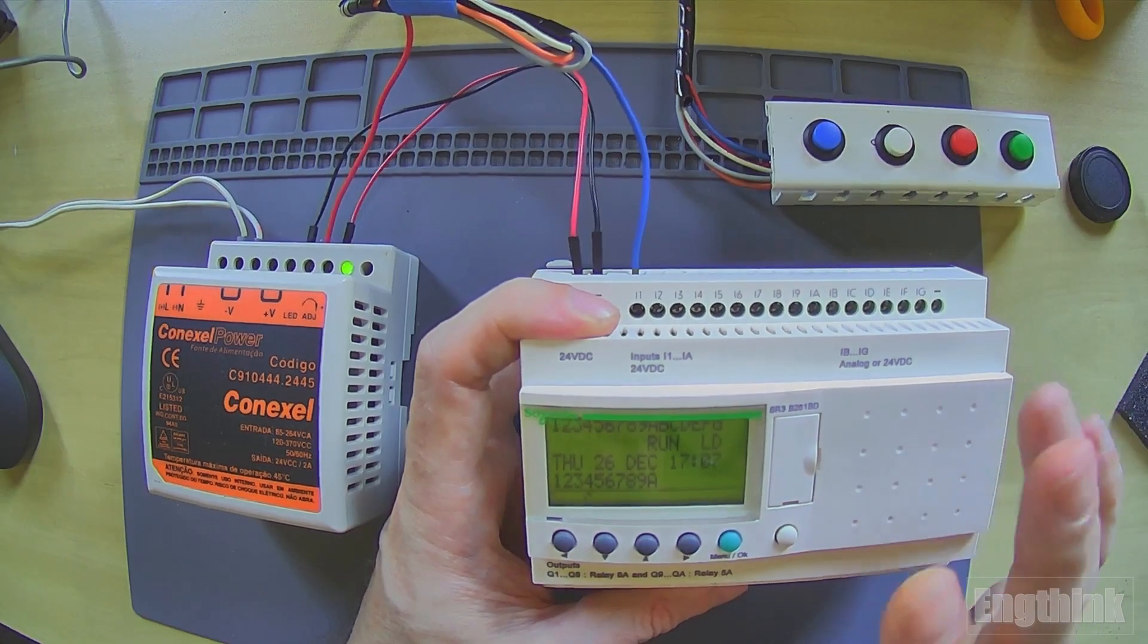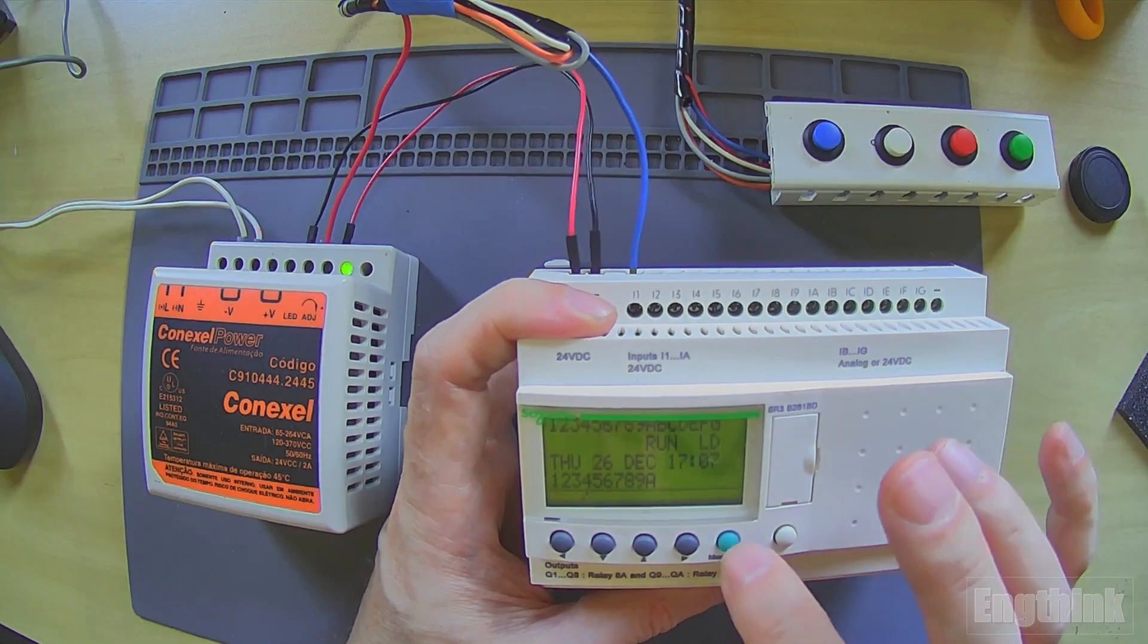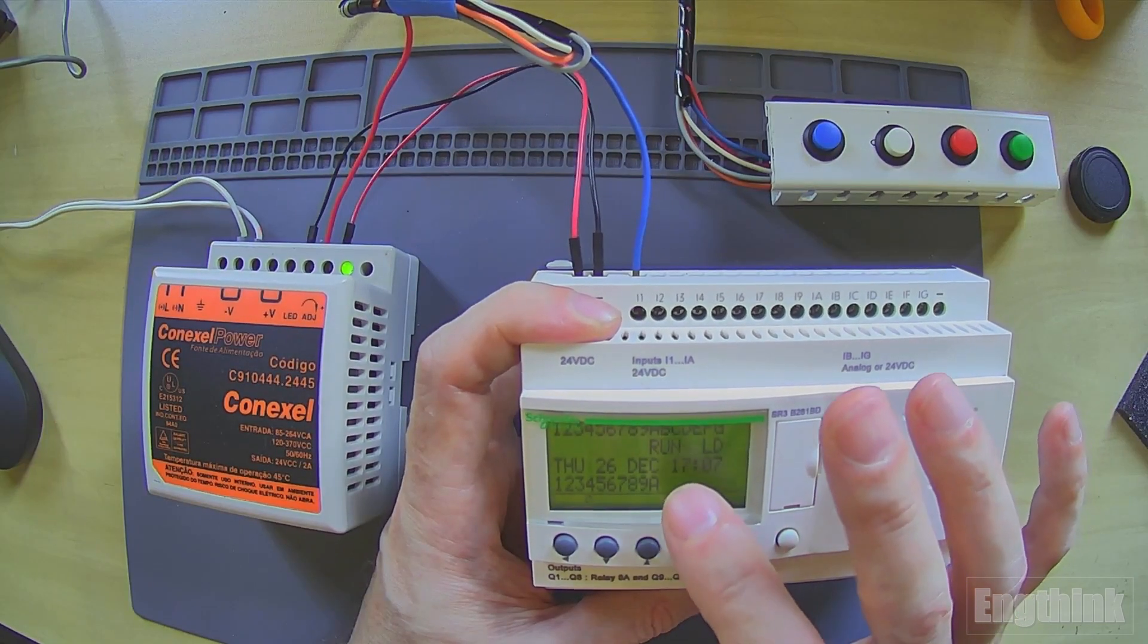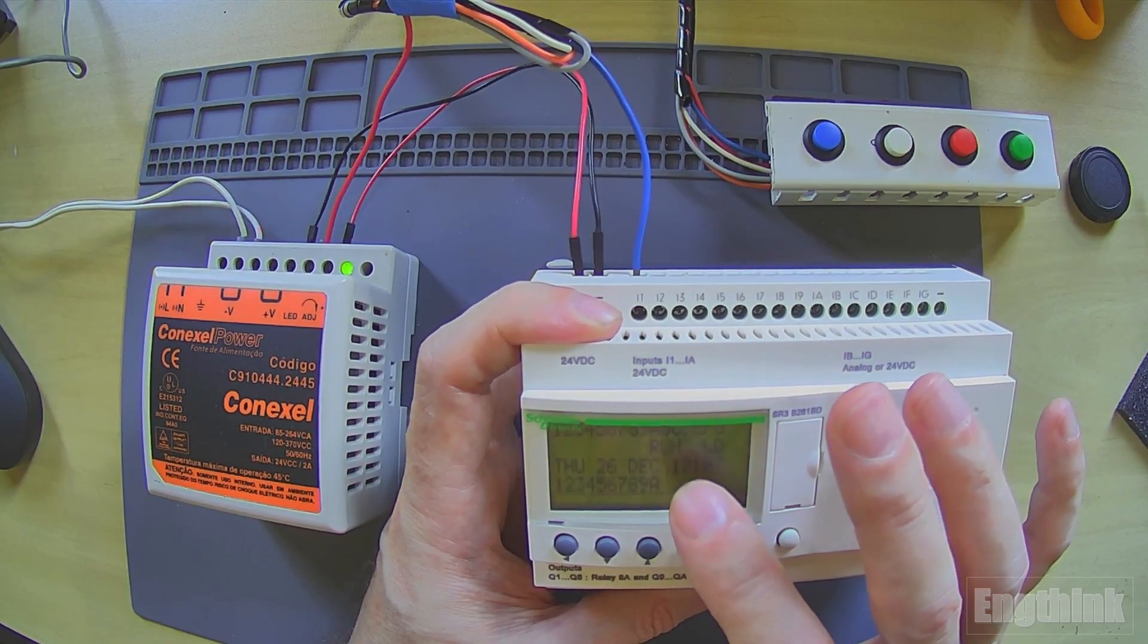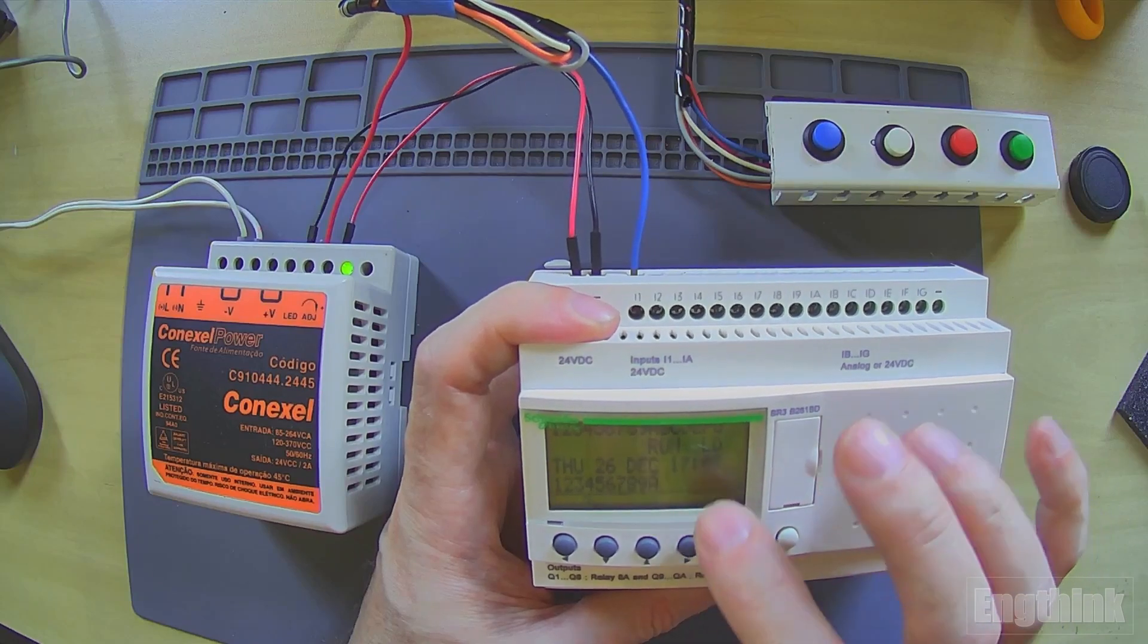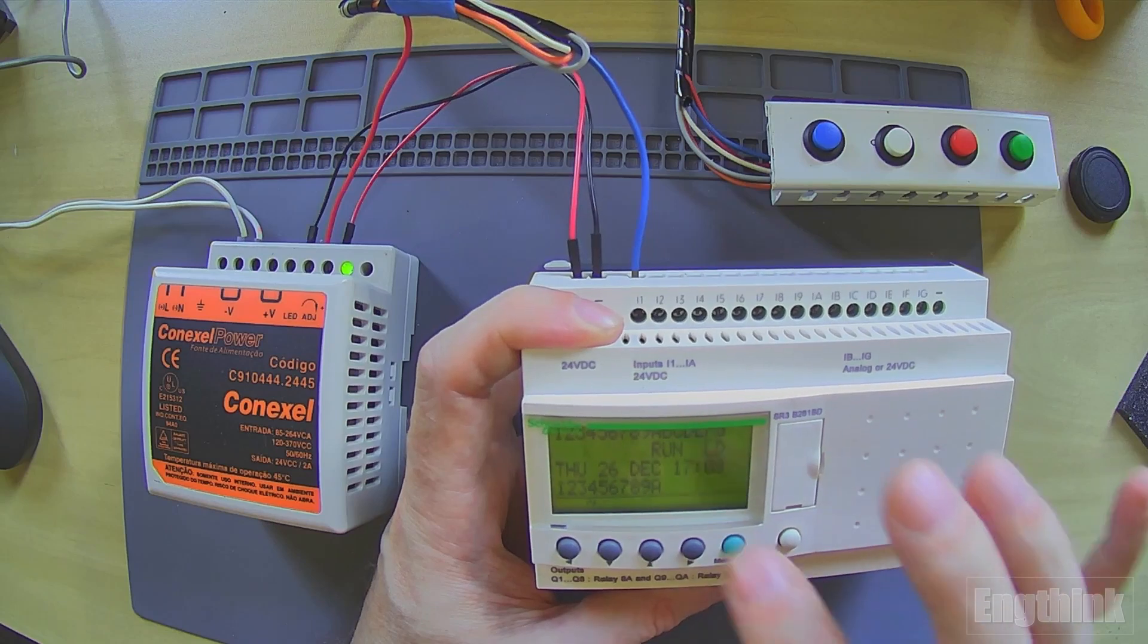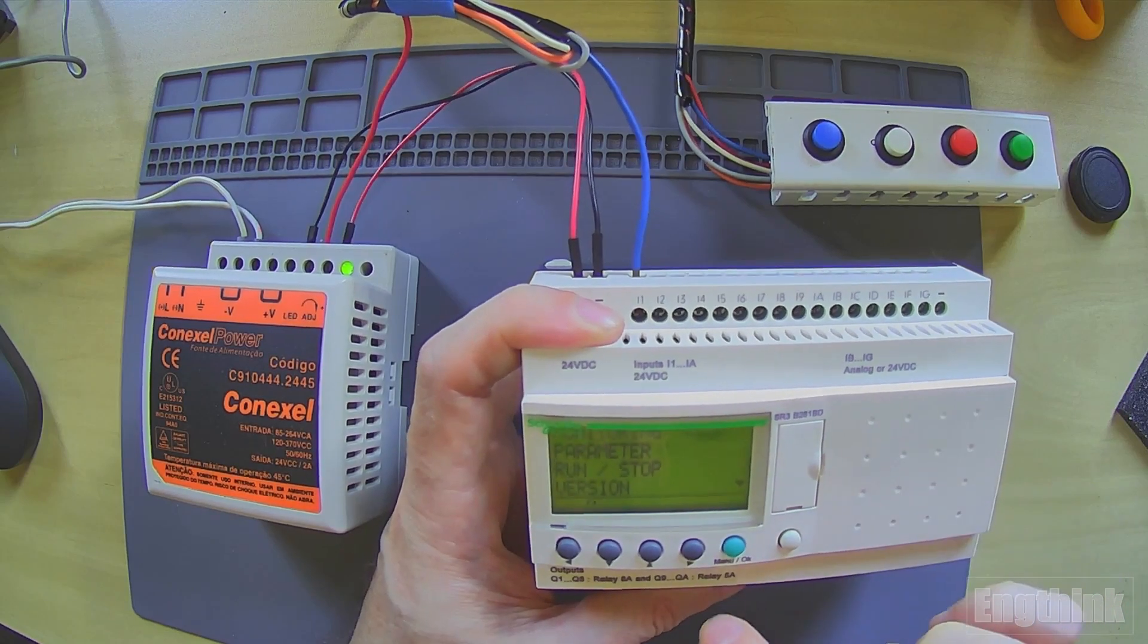To change the program, we need to go to programming mode. To enter programming mode, we need to change the status of the smart relay from run to stop. We need to stop the program to make changes.